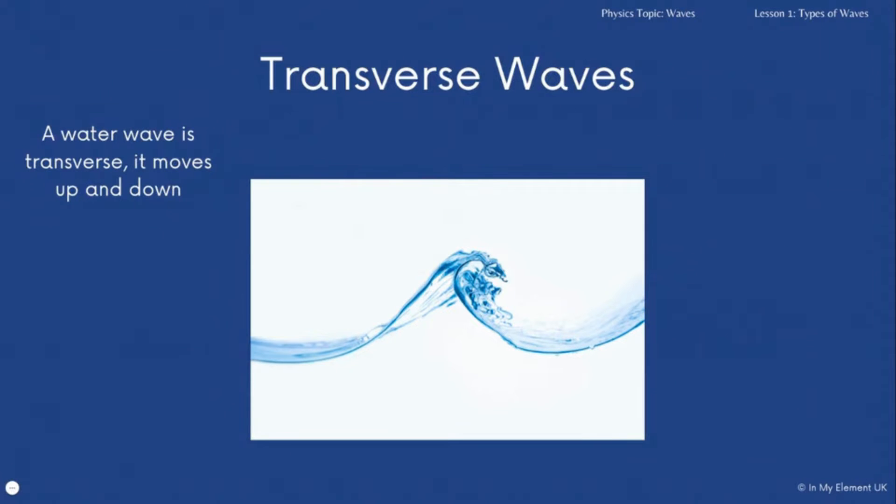A water wave is a transverse wave and it moves up and down, so that means it has undulations. That's the important word that you need to remember. You need to be able to recognize and label where those undulations are.